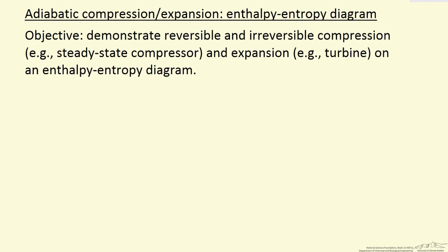Here I am going to show you what reversible and irreversible processes — both compression and expansion — look like on the enthalpy-entropy diagram, and use those diagrams to help us understand the behavior and differences between reversible and irreversible processes. These would be, for example, running a compressor for the compression process or using a turbine to get work out of an expansion process. So let's look at compression first.